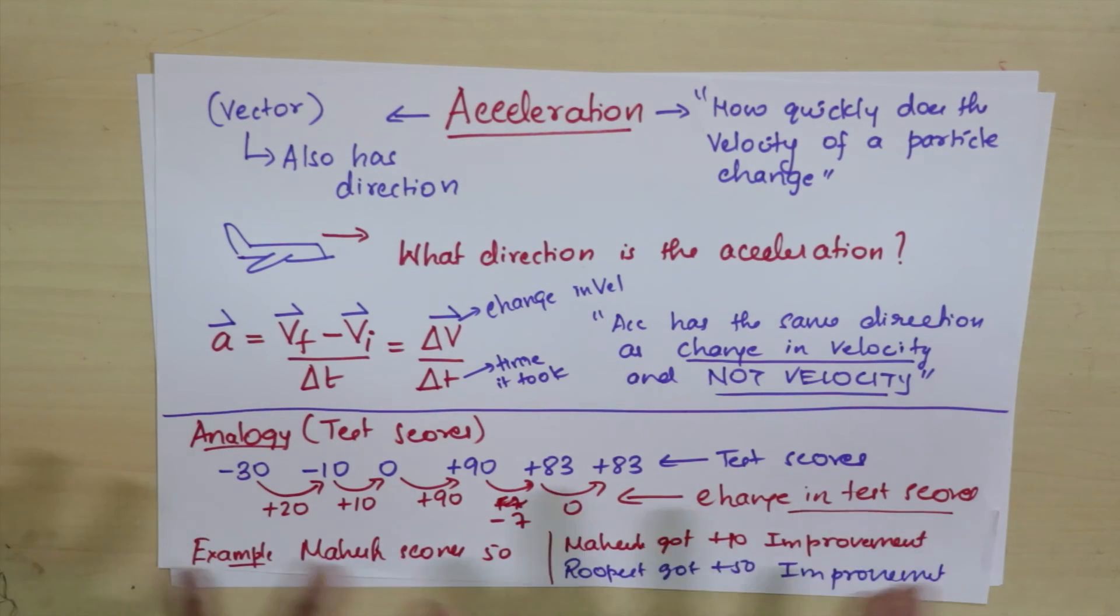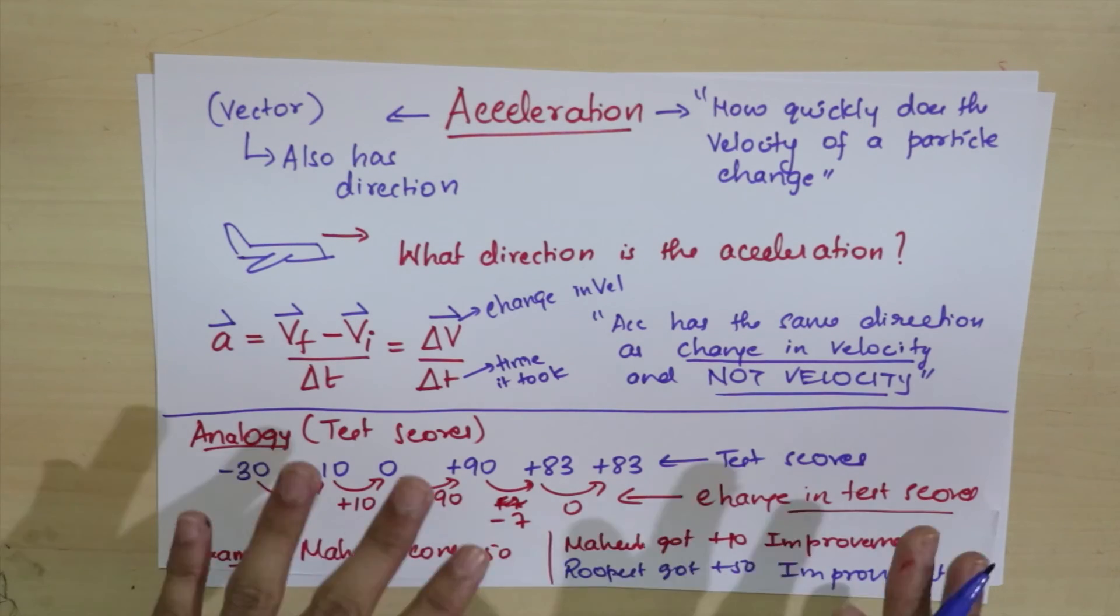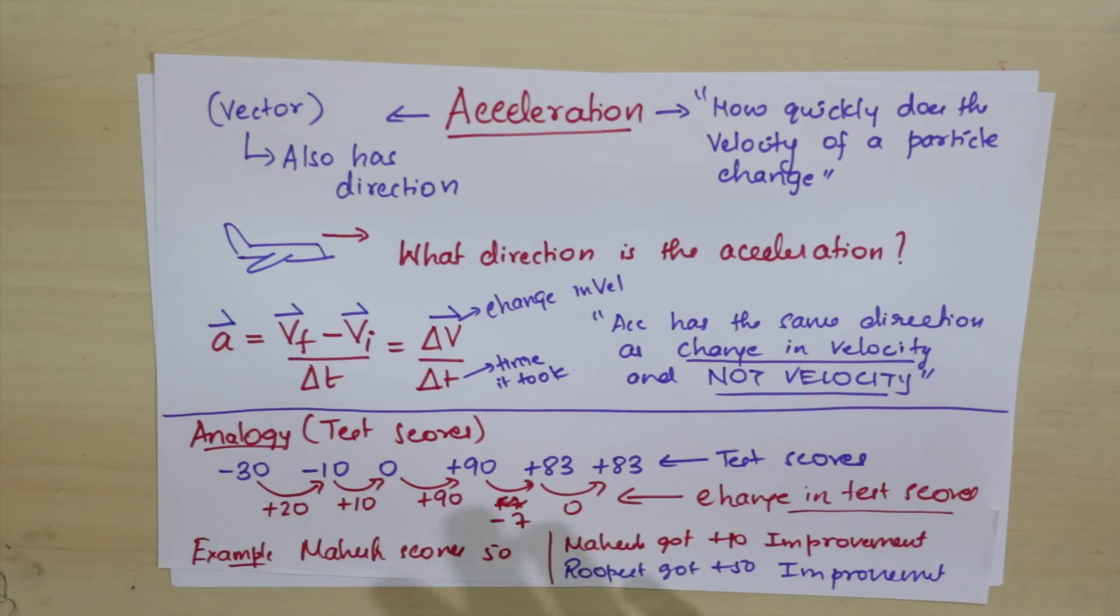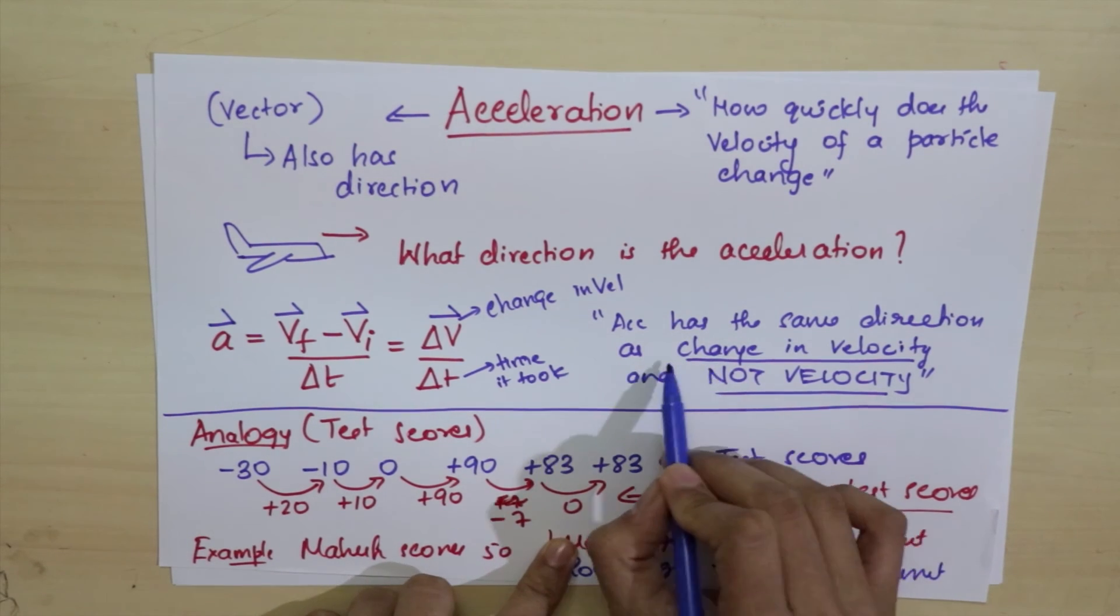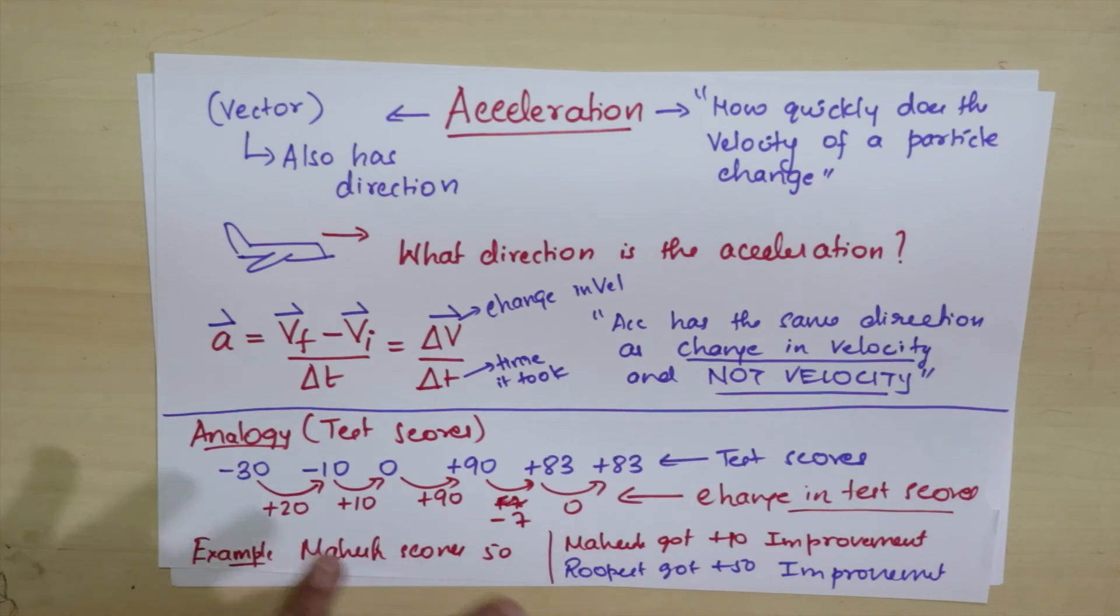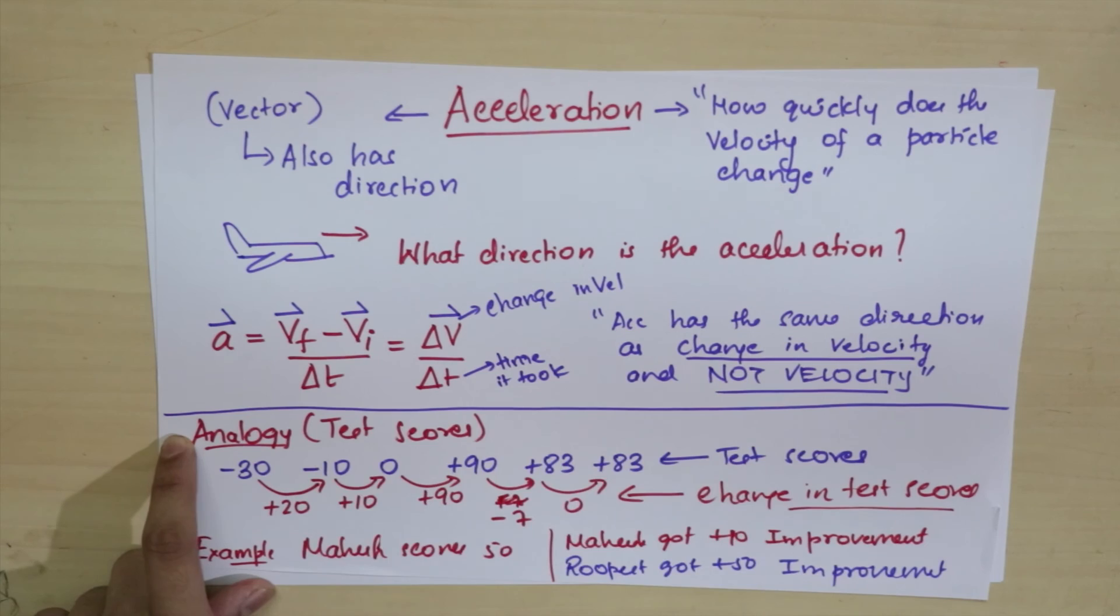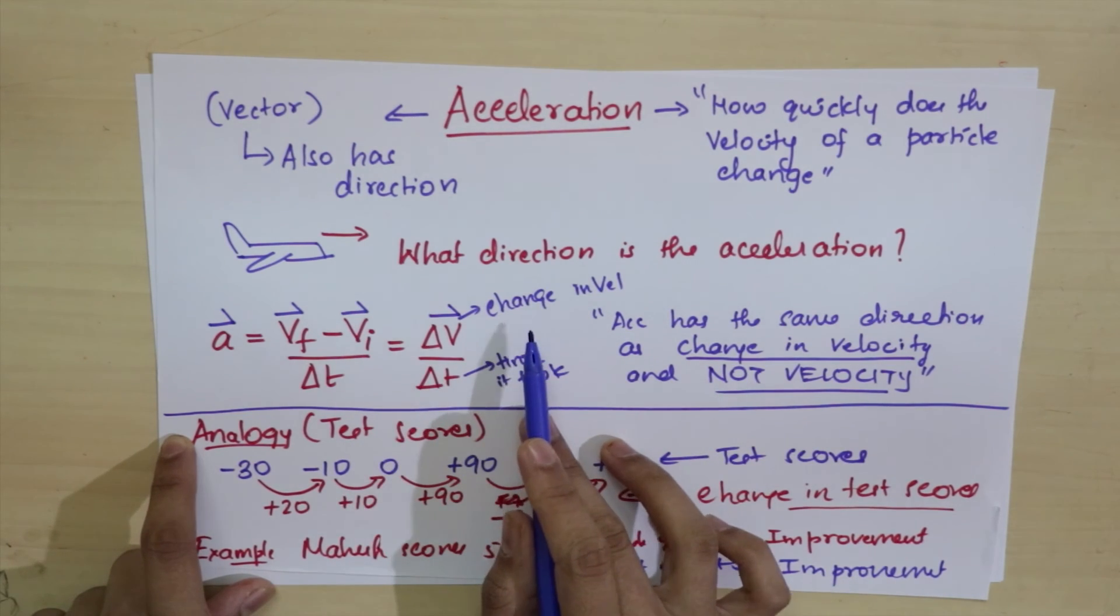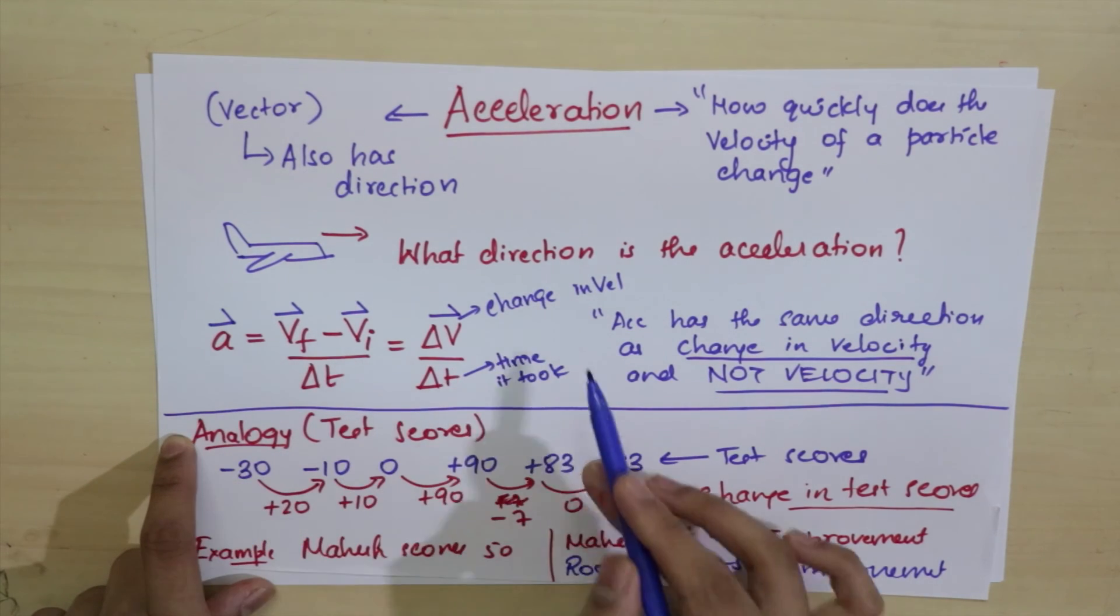The goal of this episode is to show you that these two are completely independent of each other. This is not just for tests—it could be for any quantity. A change in some quantity and the quantity itself are not the same. This is how you can understand that change in velocity and velocity can be completely different. Acceleration has nothing to do with velocity; it has to do with change in velocity.